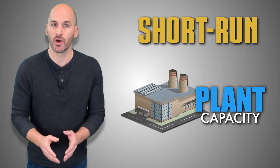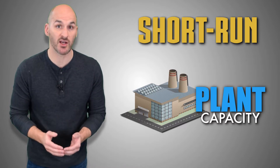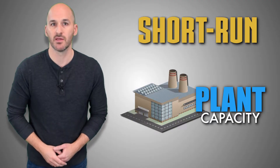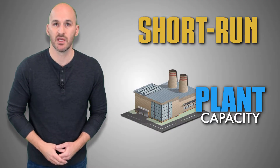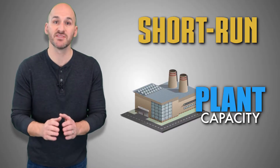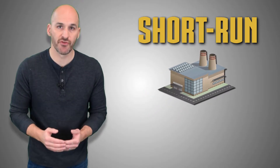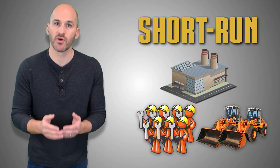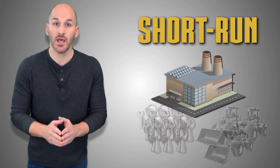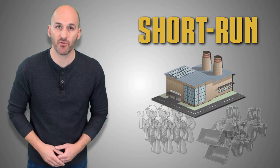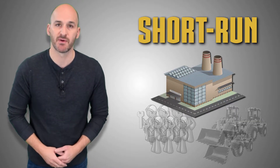In the short-run, the firm has committed to a fixed number of plants and has taken on the overhead costs of operating the facility, including the rent on land, interest payments on loans, and any insurance or business licensing fees. The firm will take on additional variable costs to fill the plant with equipment, machinery, and workers. But the number of plants built by the firm and the costs required to build them will remain fixed no matter the level of output produced by the firm.